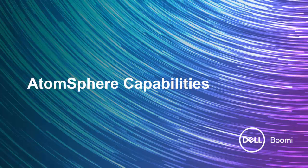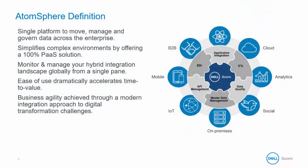In this section, we want to highlight some of AtomSphere's many capabilities. You can think of Dell Boomi as a digital business hub. It's a modern middleware layer that helps companies connect their various applications, whether they are legacy systems or cloud applications. Boomi provides a comprehensive range of capabilities to move, manage, and govern and orchestrate data.